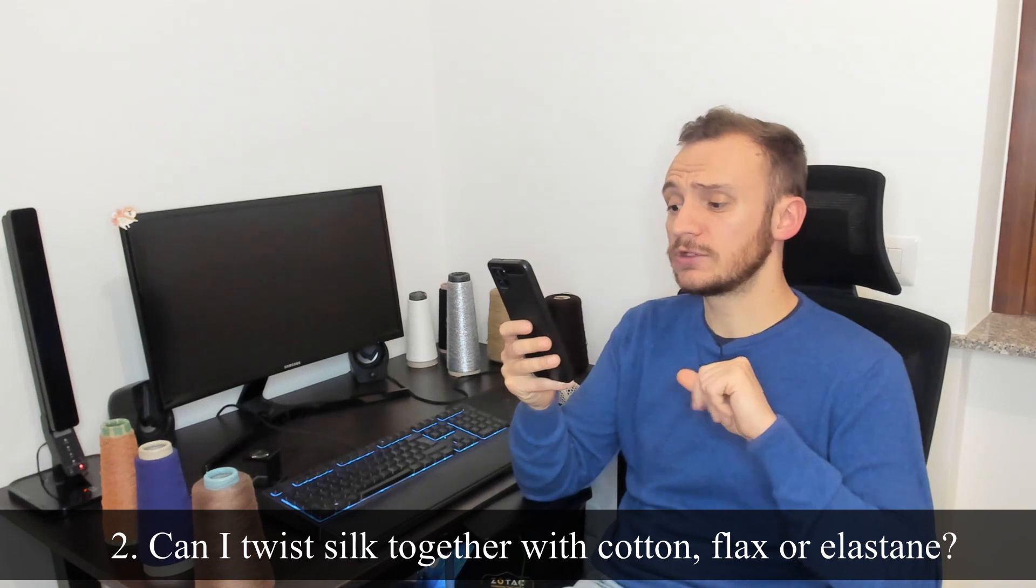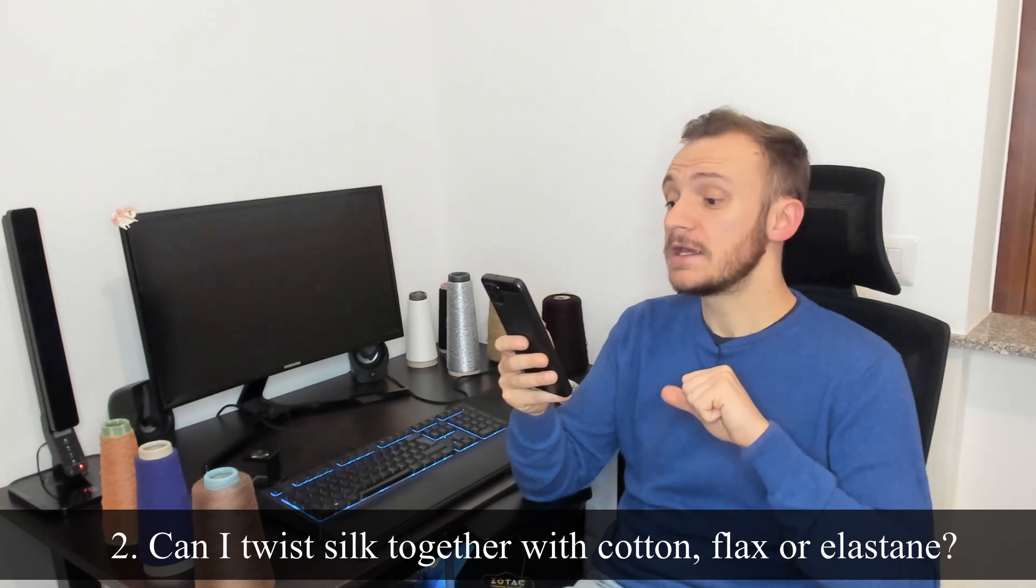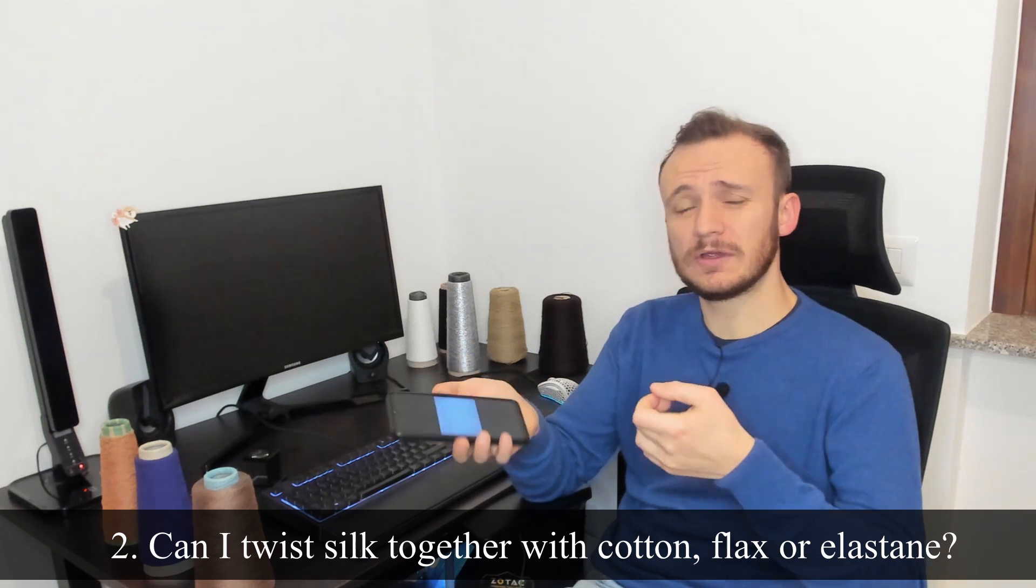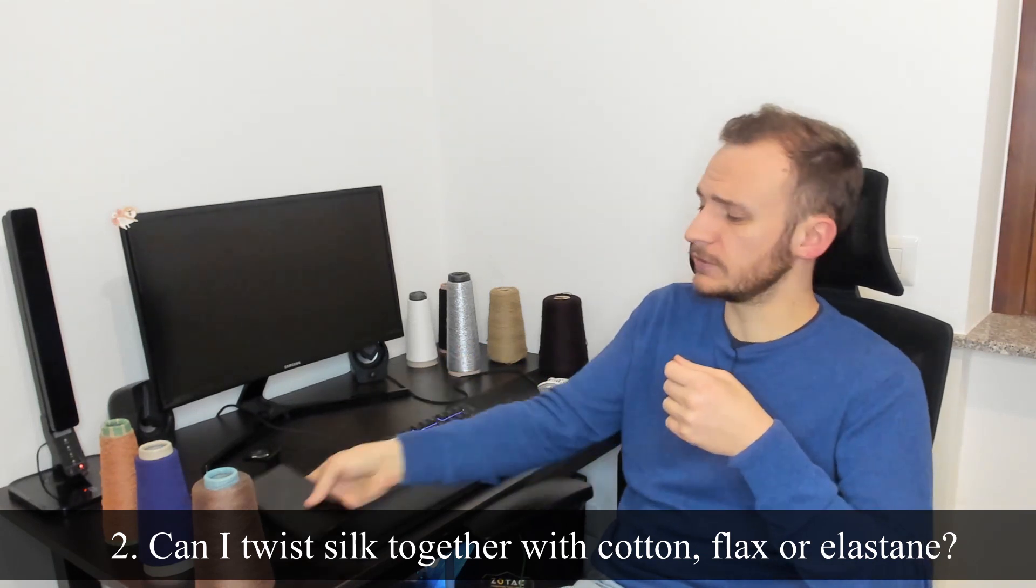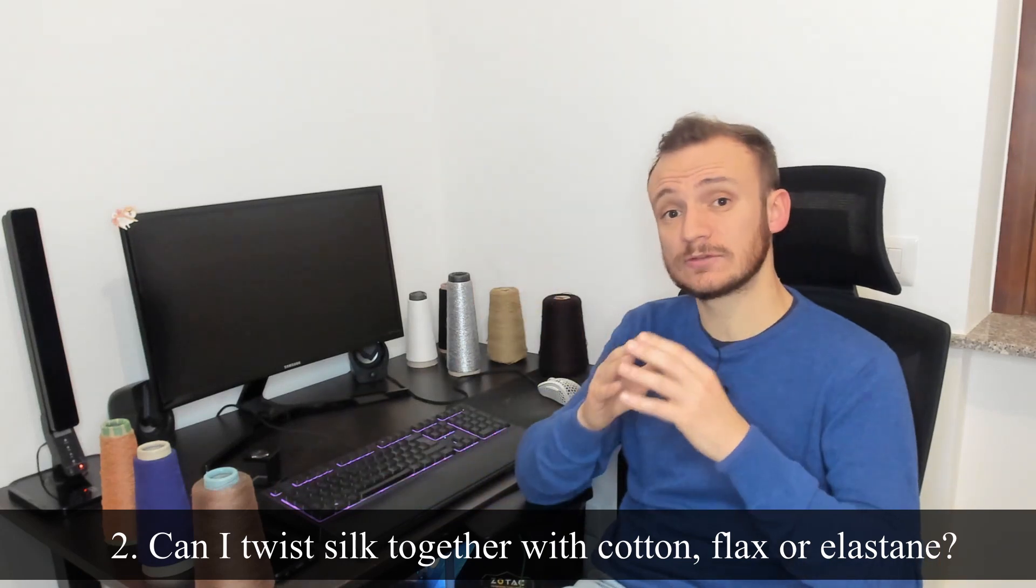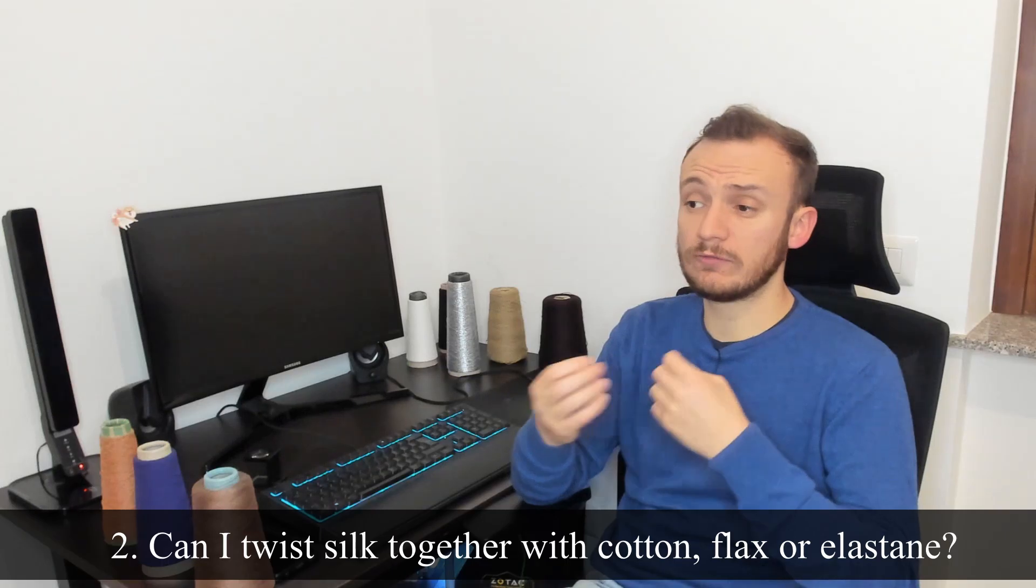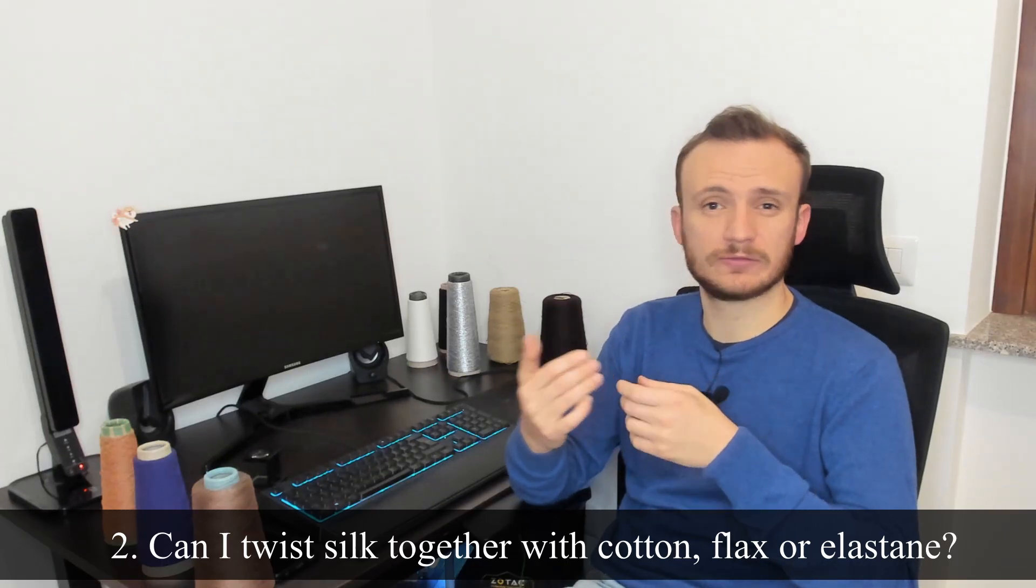Can I twist silk together with cotton, flax or elastan? Yes, but keep in mind that the balance of the yarns is very important. If you, for example, spin a yarn with an S torsion, an S twisting, you have to balance this yarn with another yarn of Z in order to avoid some rotation of the fabric.